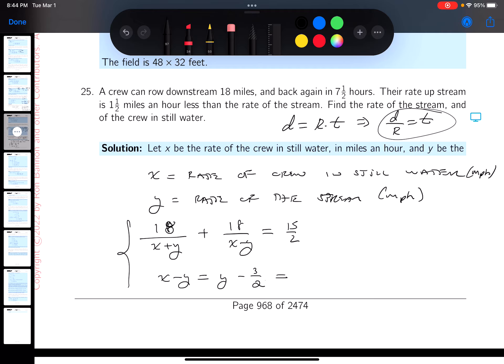I'm gonna multiply both sides by 2. I get 2X minus 2Y equals 2Y minus 3.